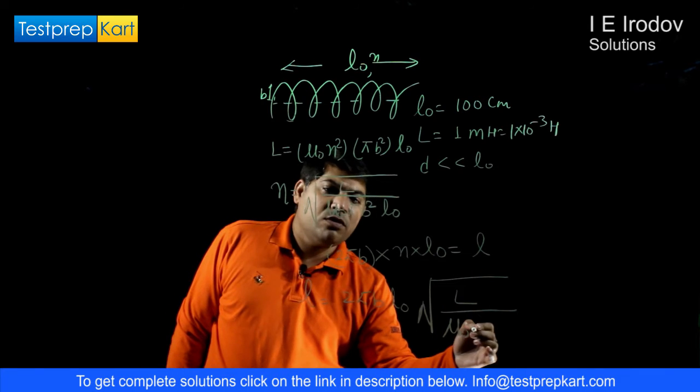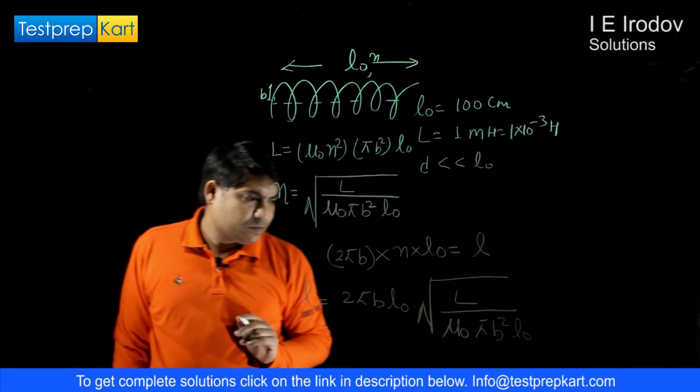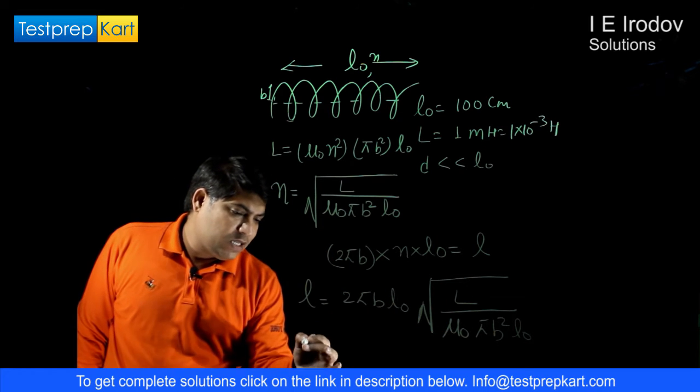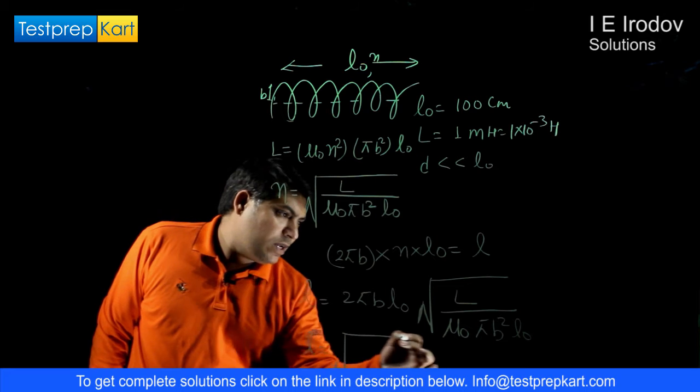We can take these terms inside the square root, so from here we will get √(4πL₀²L/(μ₀B)).